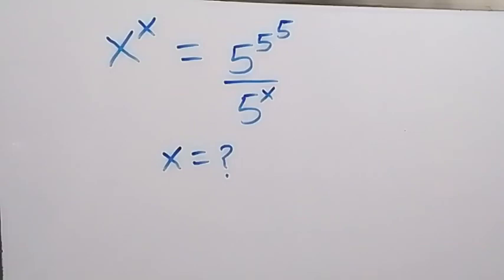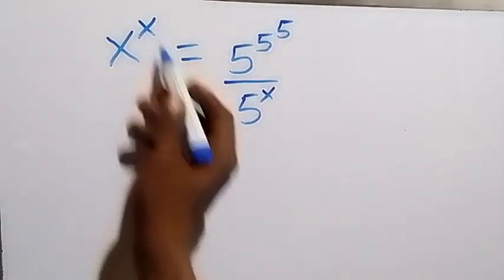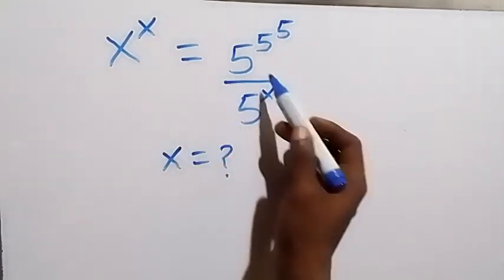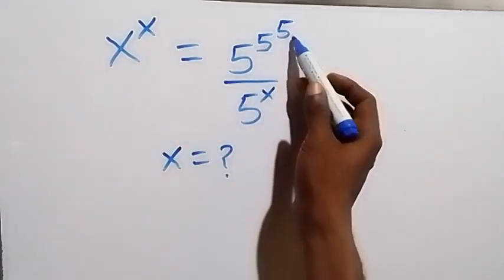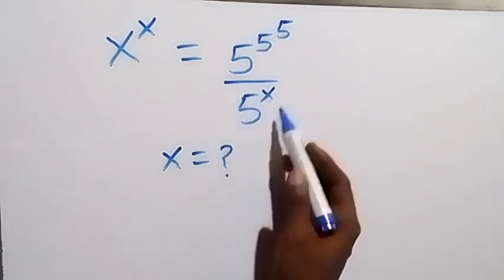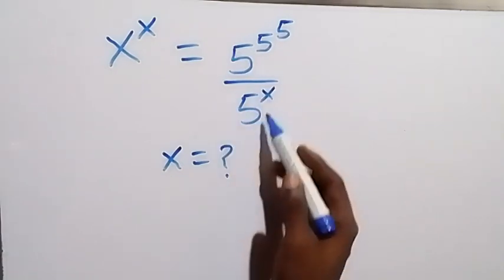Hello, you are welcome. How to find the value of x in this problem: we have x to the power of x equals 5 to the power of 5, then to the power of 5, over 5 to the power of x.